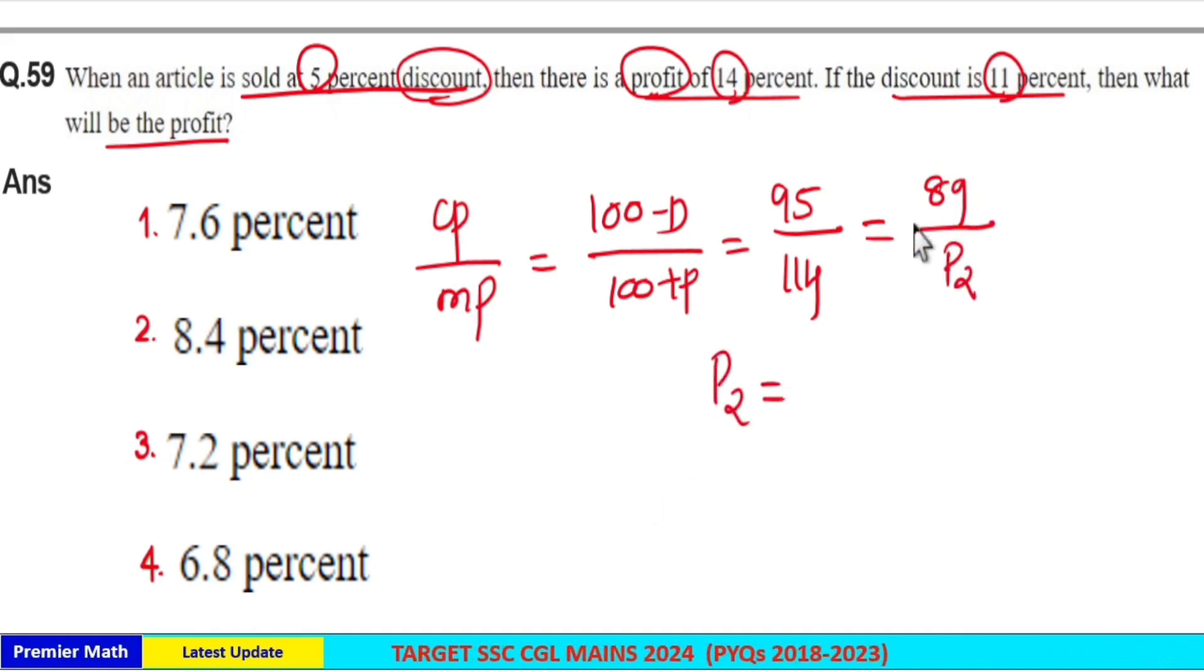So we can find the profit from this, which is equal to 114 into 89 divided by 95.